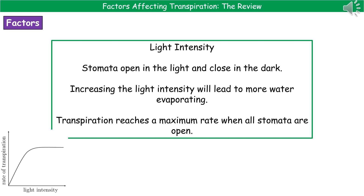The third factor is light intensity. The key point here is that stomata open in the light and close in the dark. If we increase the light intensity, more stomata will be open and therefore more water will evaporate. However, we will hit a maximum rate because the leaf only has so many stomata — once they're all open, we can't open anymore even if we shine more light on it. So increasing light intensity increases the rate of transpiration initially, but then it levels off as a result of all the stomata being open.